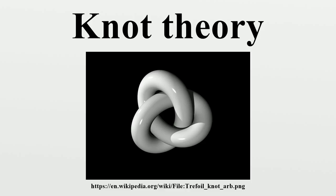Knots can be described in various ways. Given a method of description, however, there may be more than one description that represents the same knot. For example, a common method of describing a knot is a planar diagram called a knot diagram. Any given knot can be drawn in many different ways using a knot diagram. Therefore, a fundamental problem in knot theory is determining when two descriptions represent the same knot. A complete algorithmic solution to this problem exists, which has unknown complexity.